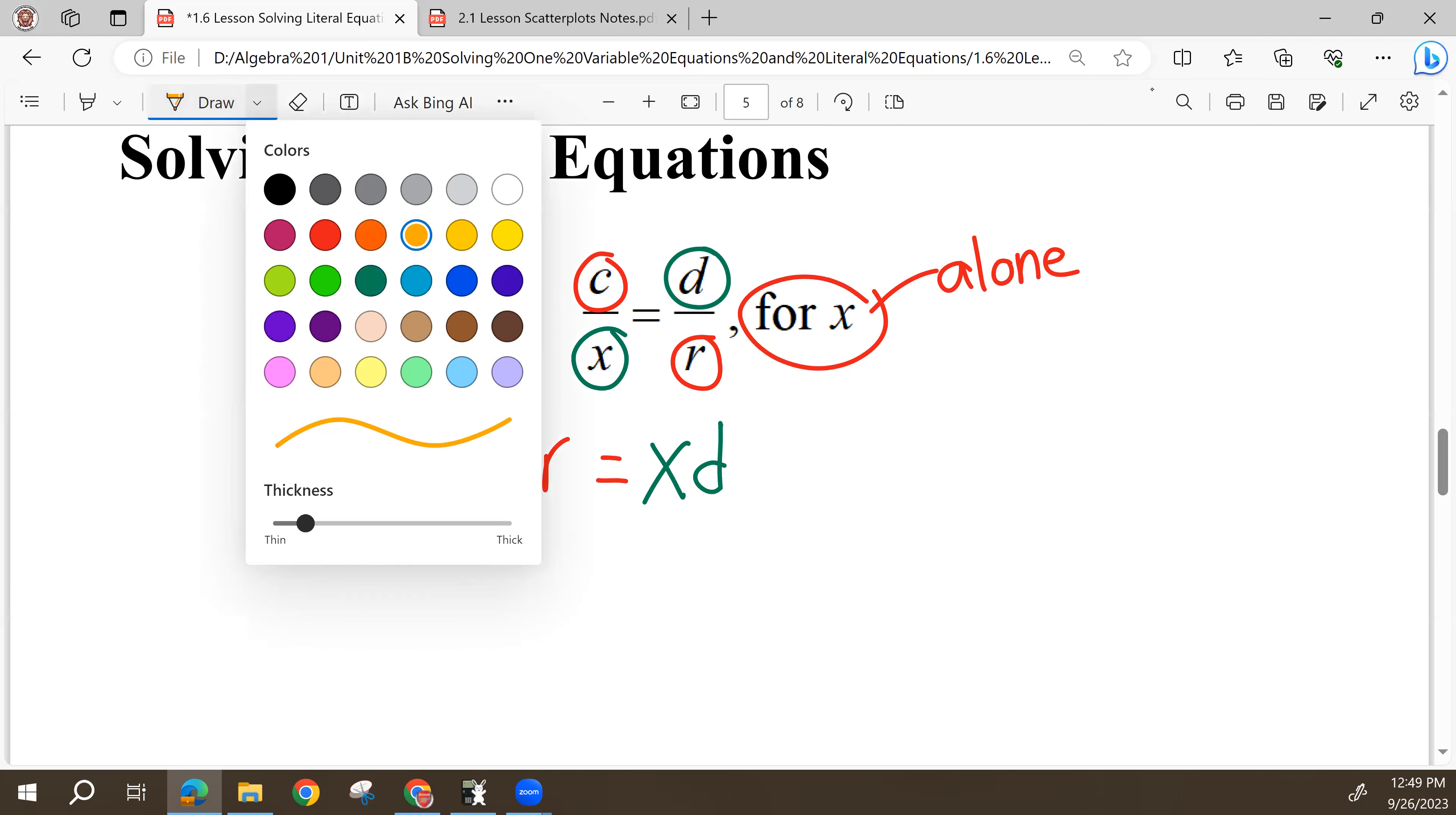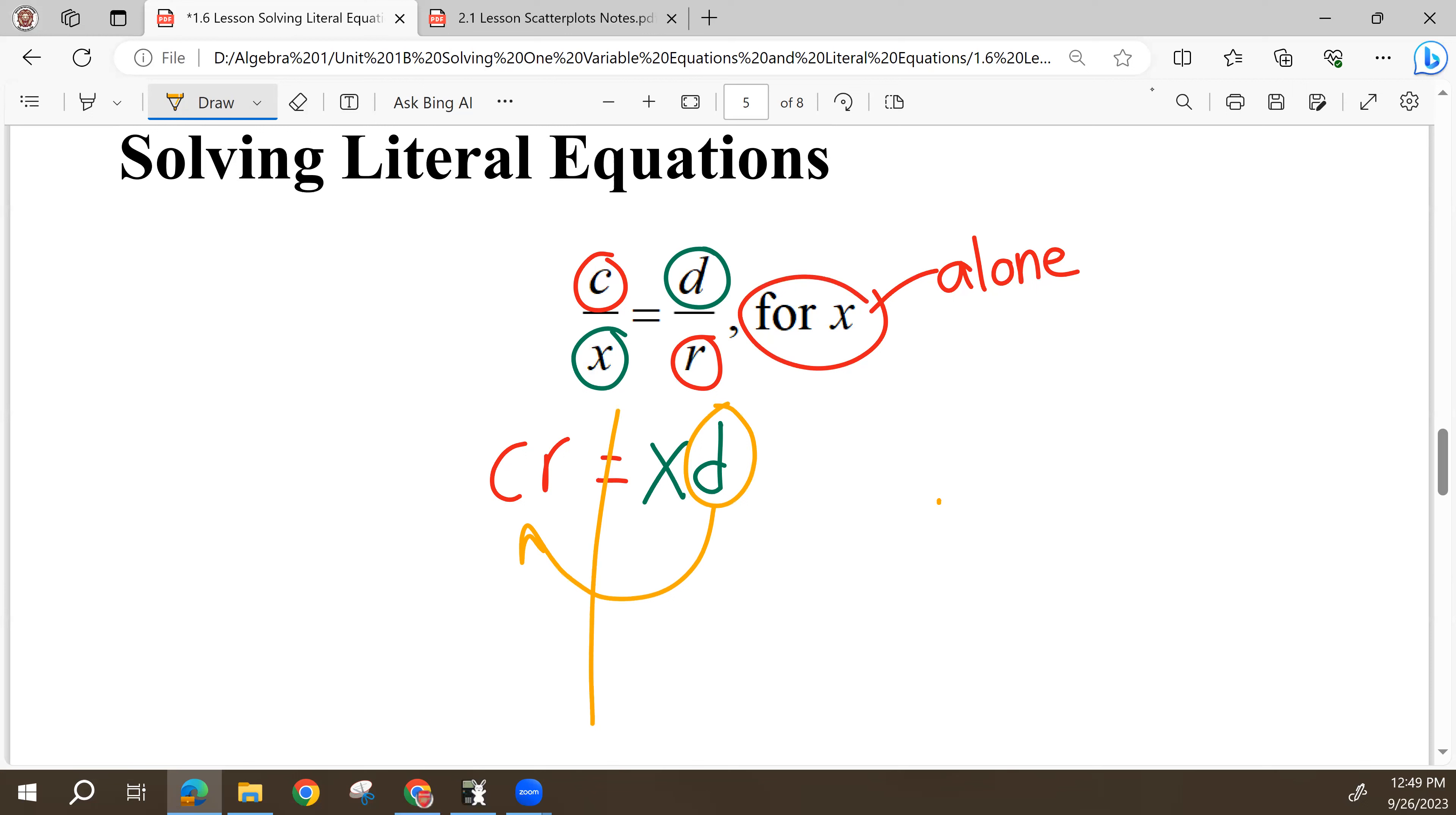And the goal here was to get X alone. We want X alone. We're solving for X. And so right now I have X times D. So I need to move D to the opposite side of the equal sign. It's multiplying X. So when it goes to the other side, it's going to divide the entire other side.